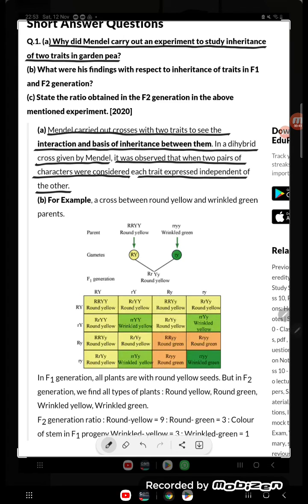And the second point: What were the findings with respect to inheritance of traits in F1 and F2 generation? Here you see a cross between round yellow and wrinkled green plants. F1 generation is giving round yellow. In F2 generation, what you are getting is round yellow 9.